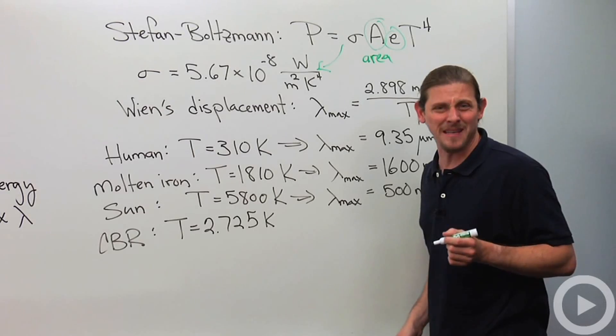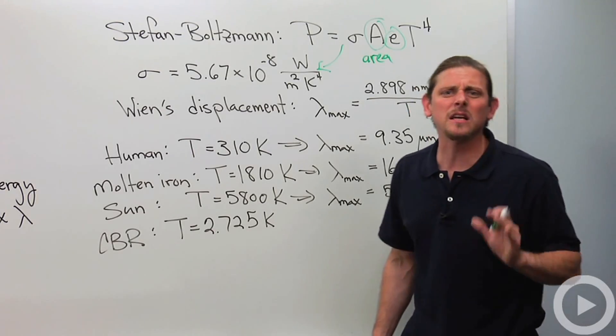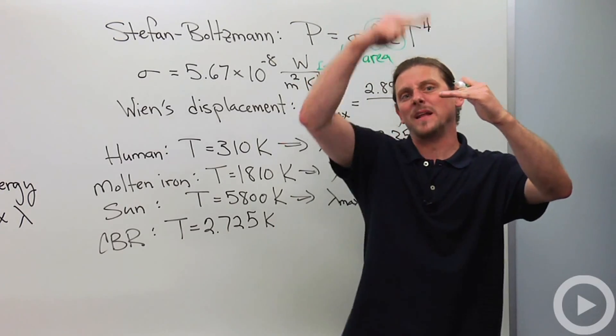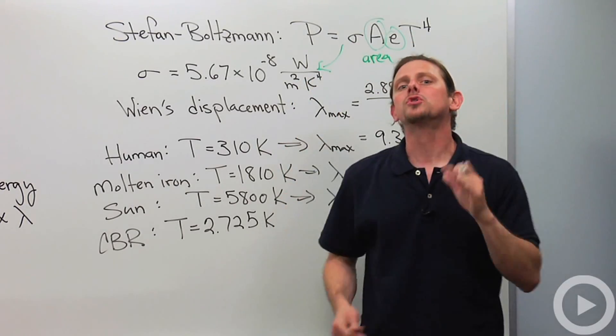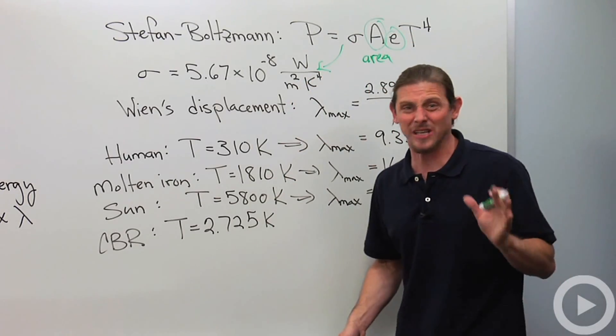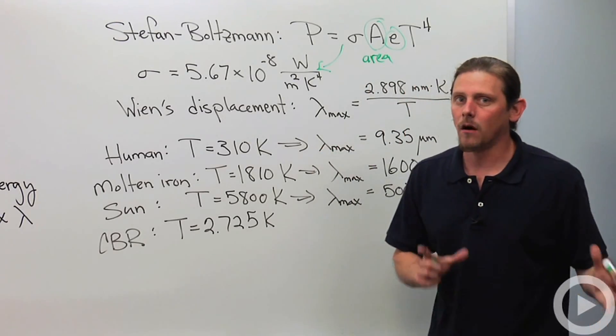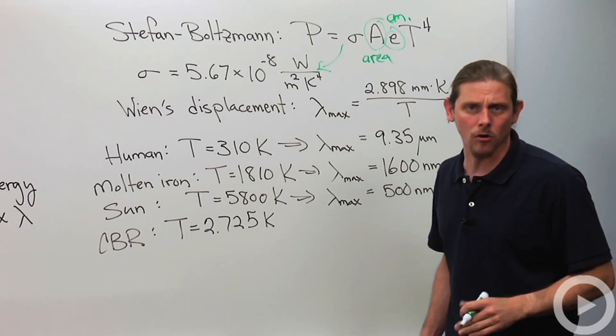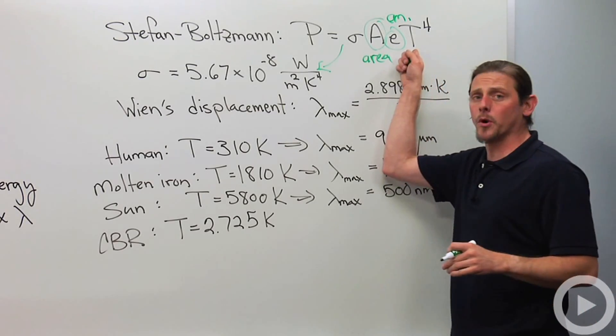Then we have this E. This is called the emissivity, and you can basically think about it in terms of like greenhouse gases. The Earth emits energy, but then some of it's bounced back. So, that would make the amount that it's actually emitting less. So, this is the emissivity. It's between zero and one.